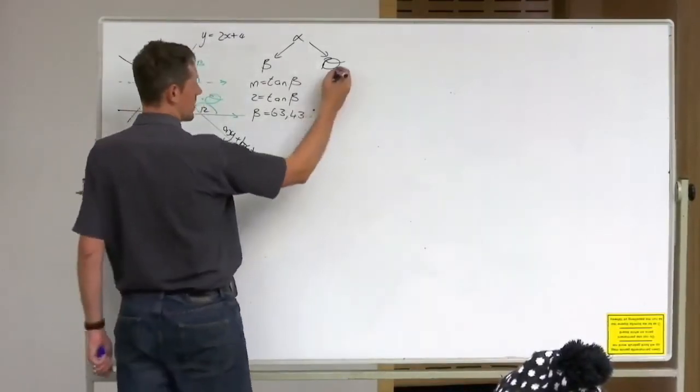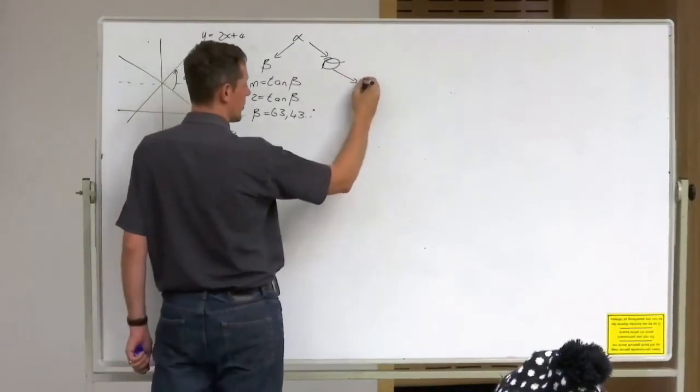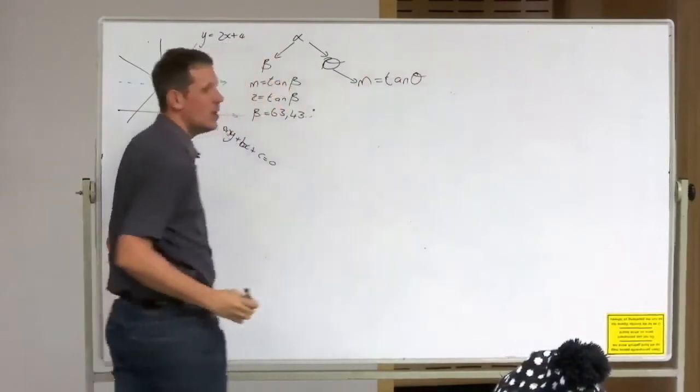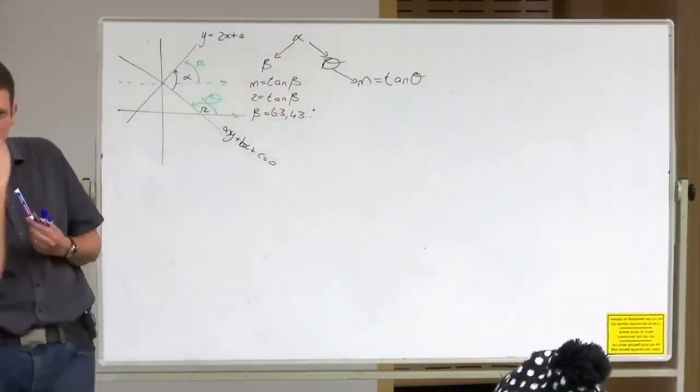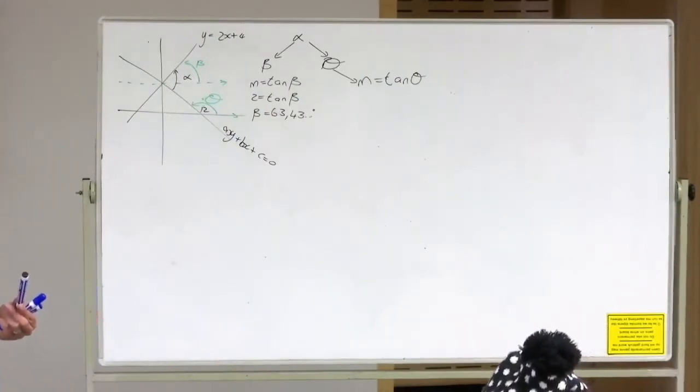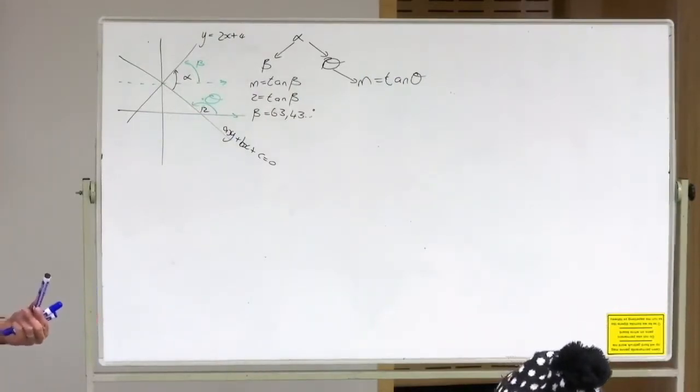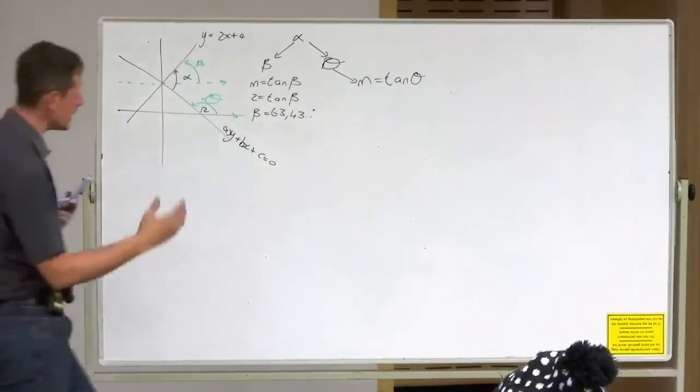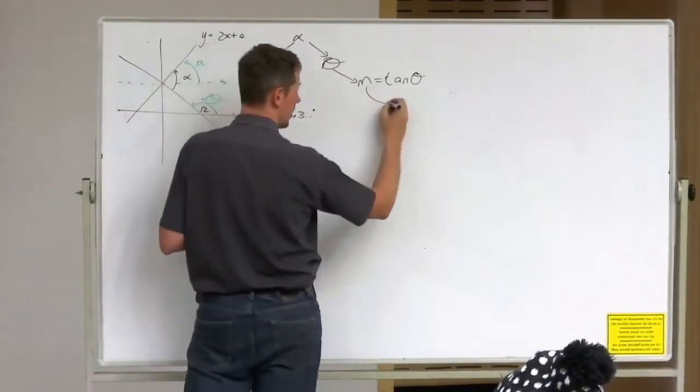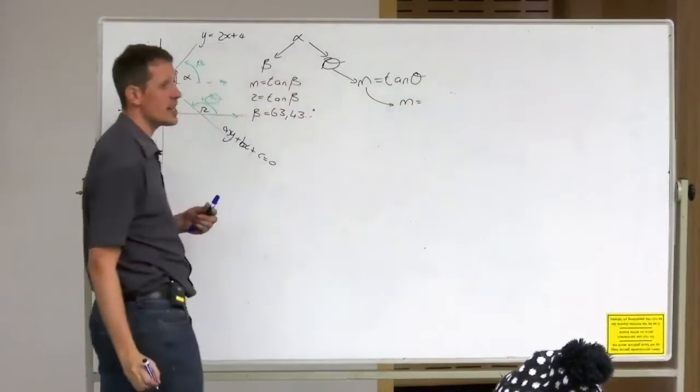Then if I go towards theta, I'm sitting with again, I want to go M is equal to tan theta, but now I come up against another mountain because I don't have M. I don't have theta. So now the moment I hit a mountain, I go, okay, but how? Now I go and I say, I need M to get theta.